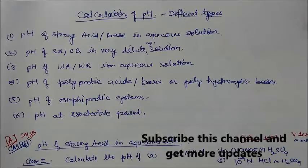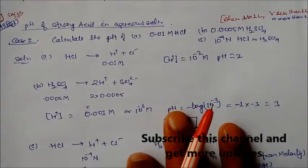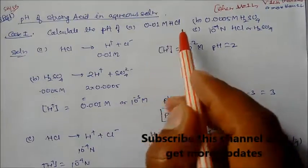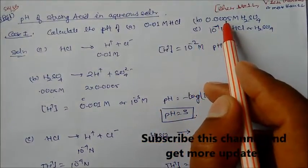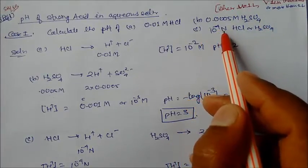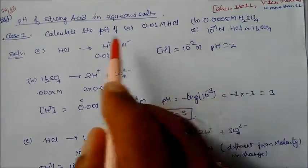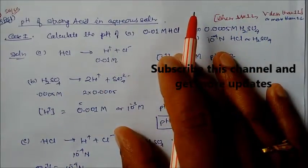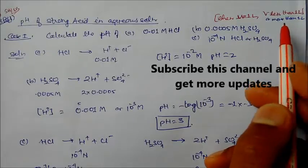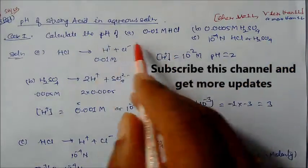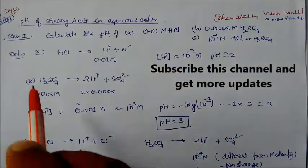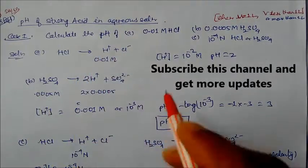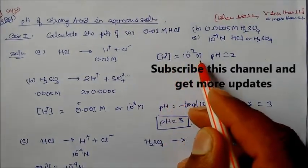Case 1: pH of strong acid in aqueous solution. Calculate the pH of (A) 0.01 molarity HCl. Here, volume is fixed at one liter. HCl dissociates into H⁺ and Cl⁻, so the concentration of H⁺ is 0.01, which equals 10⁻². Since HCl is a strong electrolyte, pH equals 2 directly.